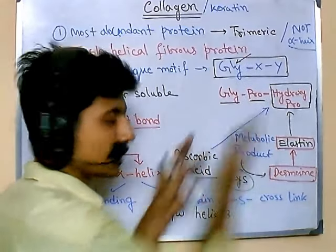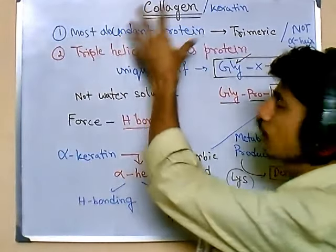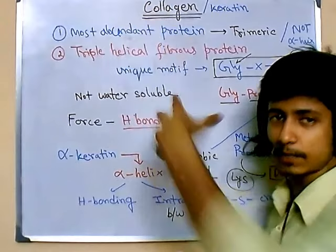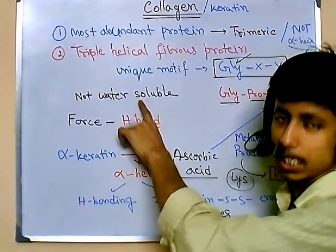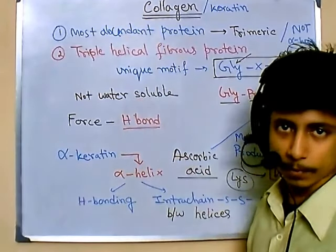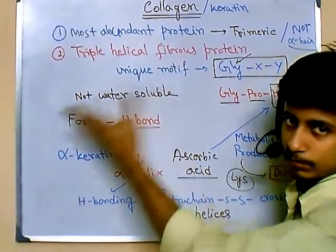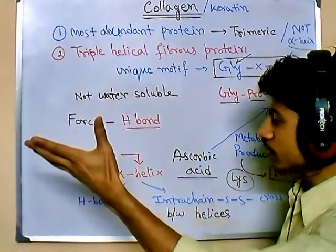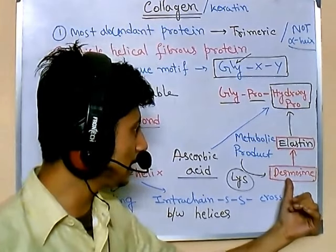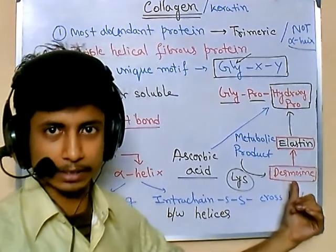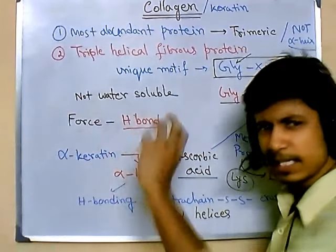Collagen is a fibrous protein and it is insoluble in water — it's an insoluble protein. Similarly, elastin is also another insoluble fibrous protein.